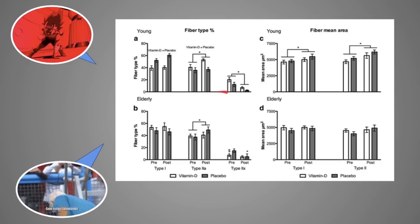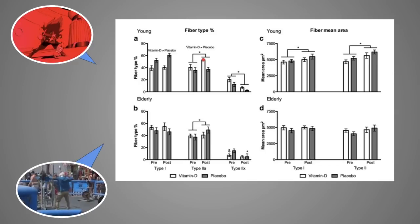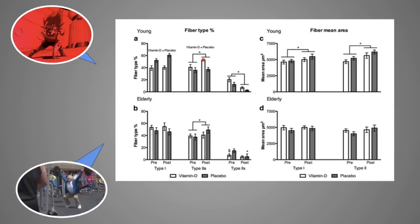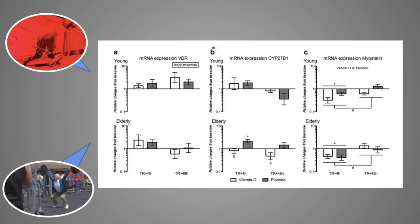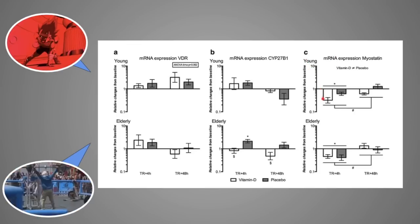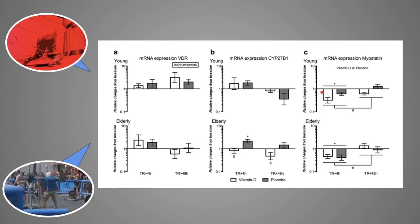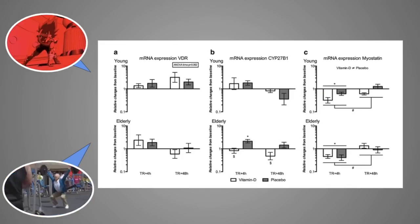Another benefit of vitamin D supplementation was the fact that the younger group had a greater increase in type 2A muscle fibers. Long story short, those are the muscle fibers that grow the most from training. And the most important part is the change in myostatin. As you can see here, the young group had a much bigger drop in myostatin compared to the placebo that did not take vitamin D.